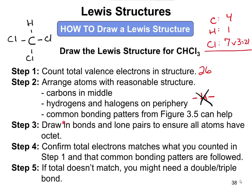Step three: draw in bonds and lone pairs to ensure all atoms have an octet. Carbon has two, four, six, eight electrons — it has its octet. Hydrogen doesn't get an octet, it just gets a doublet, so that's good. Chlorine only has two electrons around it from the bond, but it should have eight. So we add three lone pairs to each chlorine. Now each chlorine has two, four, six, eight electrons around it. Everything has the correct number of electrons — everything has an octet except hydrogen, which has its doublet.